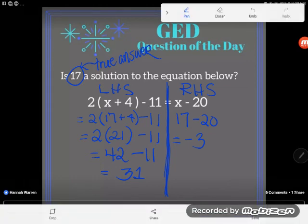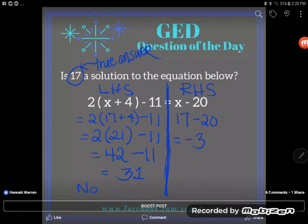Are those two numbers equivalent? Are they equal? Of course they're not—they're two different numbers. So the left hand side is not equal to the right hand side, and so 17 is not a solution. My answer to this is no.